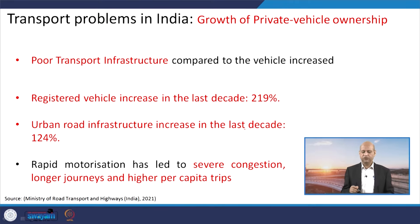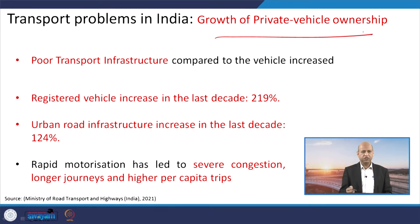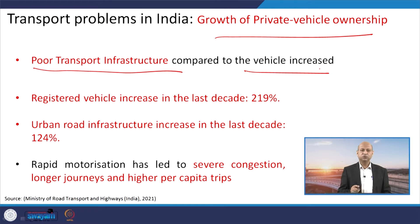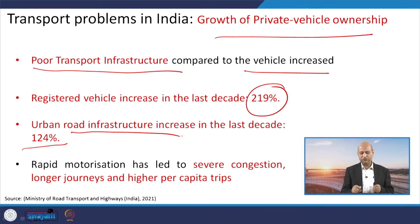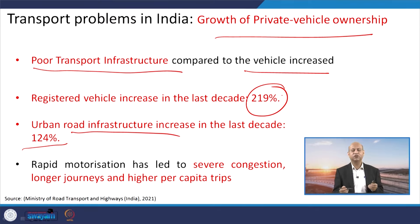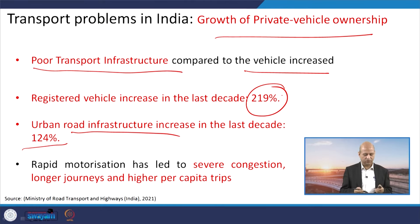Relating this growth of privately owned vehicles to key indicators, we see poor transport infrastructure compared to vehicle increase. Vehicle ownership has increased but infrastructure has not kept pace. There has been a 219 percent growth in registered vehicles in the last decade, while infrastructure growth is roughly half that, meaning there is nearly double the gap between vehicle growth and infrastructure expansion. Congestion is the direct result of these developments.